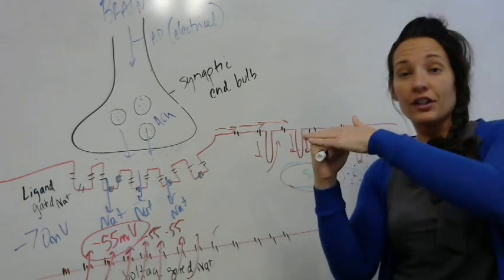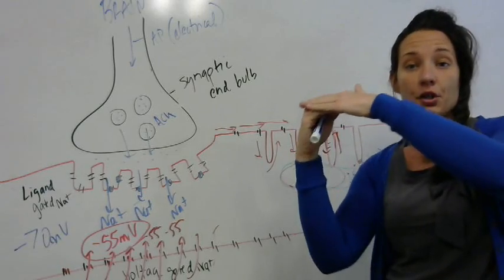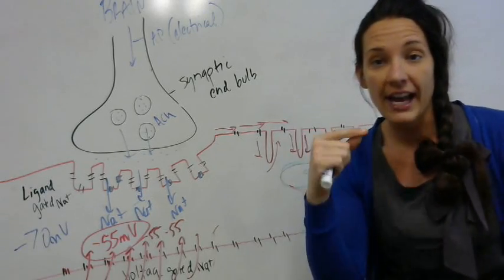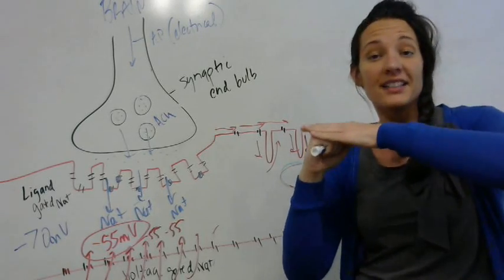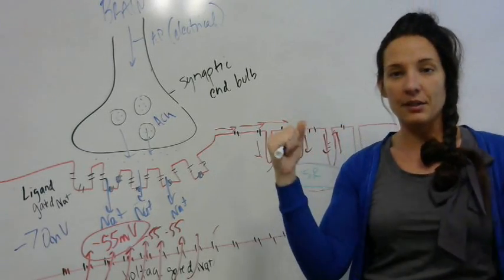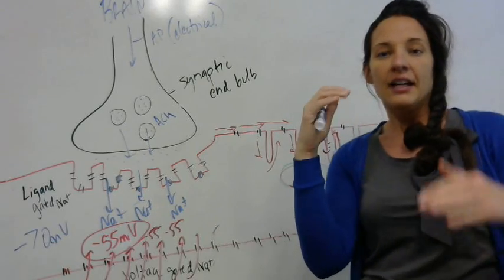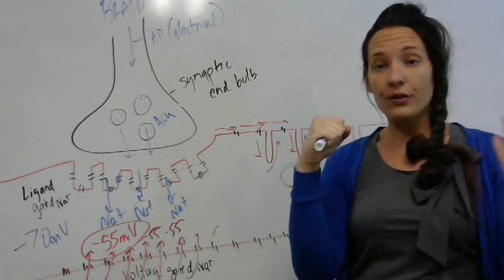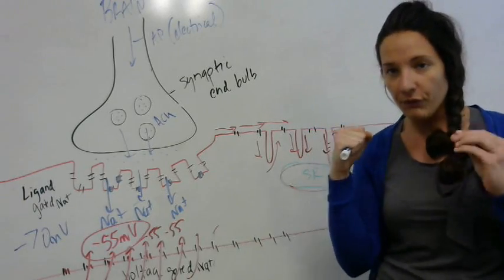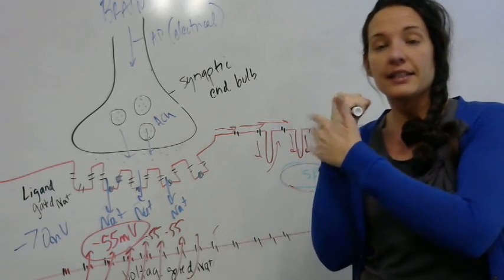Once that occurs, we undergo power stroke, which is the physical pulling of actin toward the M line. Once we get to that point, myosin is kind of stuck. We have that head cocked in that position allowing no further movement. In order for me to move further, I have to bring in another ATP.